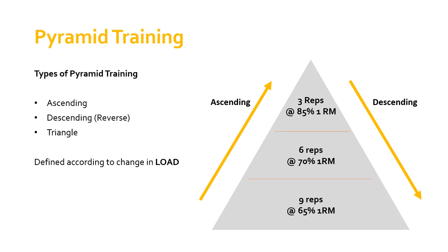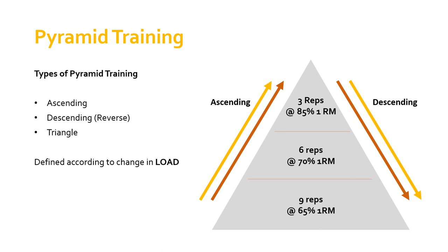The descending pyramid is generally regarded as preferable for strength training, but you can mix it up. The reason it's generally preferred is because you're not fatigued on your heavier sets. Whereas if you go ascending, you're at risk of being fatigued on your heavier sets and putting yourself at risk. If you do descending, you're going to start with the heavier loads, which obviously requires a really good warm up. If you combine these two — going from nine reps at 65 percent up to 85 percent and then back down again — then you're doing what is known as a triangle pyramid. Ascending is where load increases through the sets, descending is where load comes down, and a triangle pyramid is where you go up and then back down in terms of load.